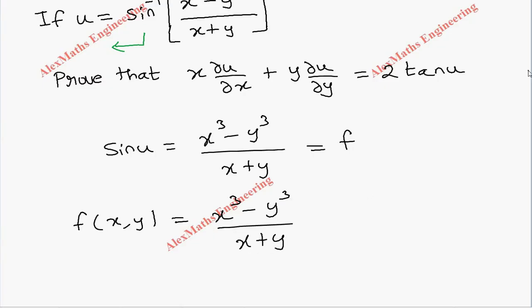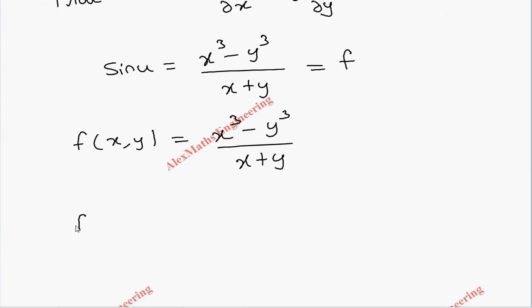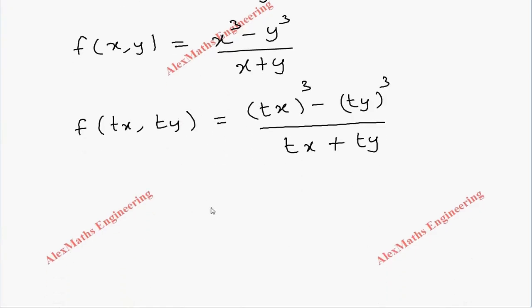Now we have to replace x as tx and y as ty, so this will become (tx)³ - (ty)³ divided by tx + ty. In the numerator it will become t³x³ - t³y³ divided by tx + ty.